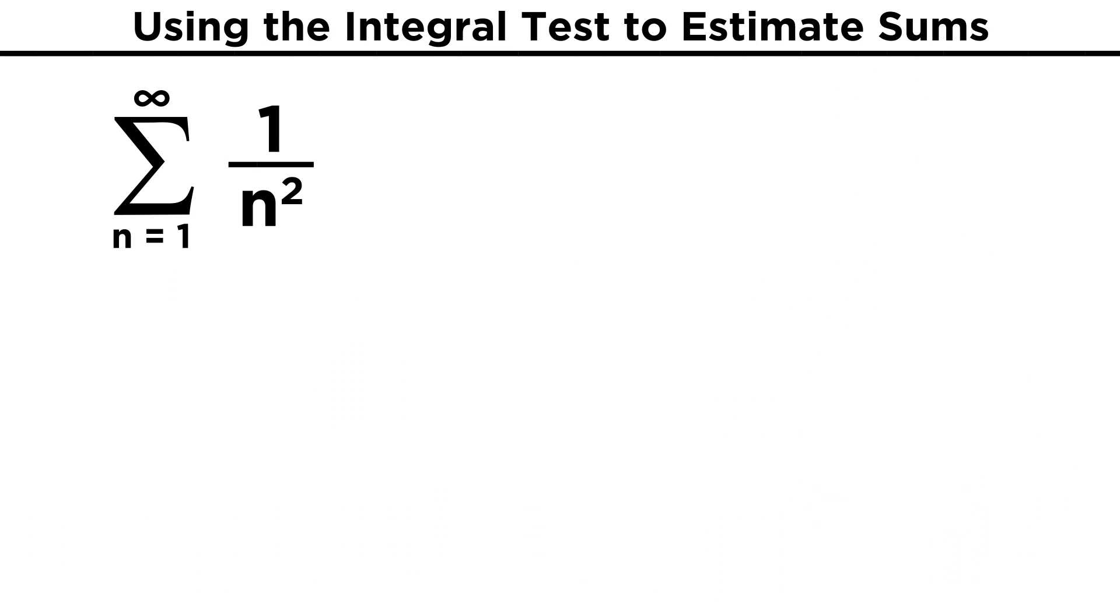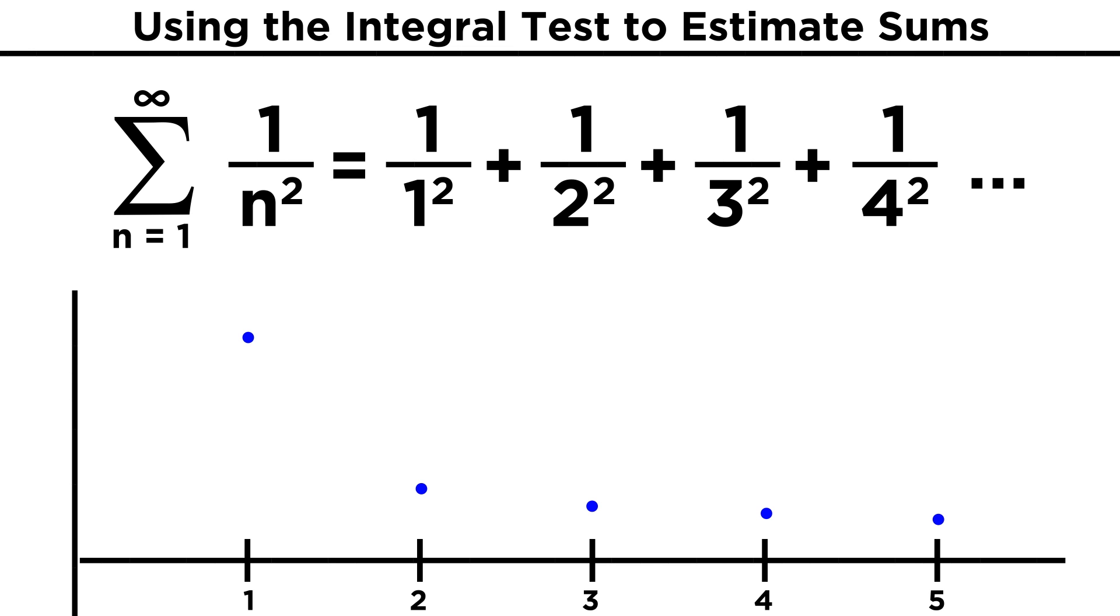Take something like the sum of one over n squared from one to infinity, giving us one over one squared, plus one over two squared, plus one over three squared, and so forth, and we can easily plot these points graphically.